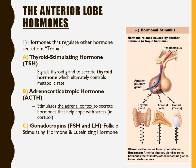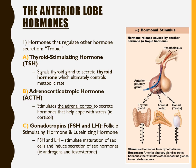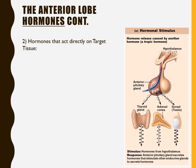FSH and LH are termed gonadotropins — they stimulate the gonads, meaning ovaries and testes. Follicle stimulating hormone and luteinizing hormone essentially stimulate the maturation of sex cells: eggs in the ovaries and sperm in the testes. They also induce secretion of sex hormones from those glands, such as testosterone, androgens, and estrogens.